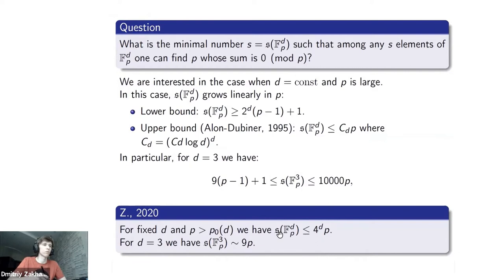My result is that I improve this constant cd. I replace this expression by just 4 to the d, but I should take p sufficiently large for this bound to hold. And even more, in the three-dimensional case I can even find an asymptotic value of this. Just a short question: when you write the d equals 3 case, do you mean that for sufficiently large p you have an upper bound of 9p, or you mean that asymptotically it's 9 plus little-o of 1 p? In my result I mean asymptotic. So you will have some error factor, even for large p. Yeah, little-o of p.